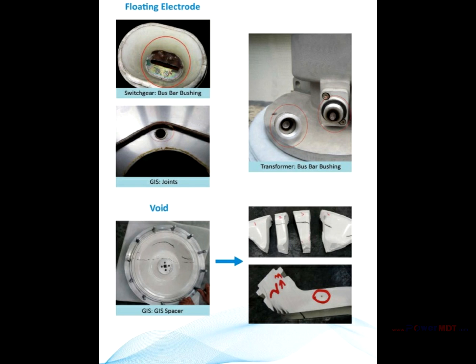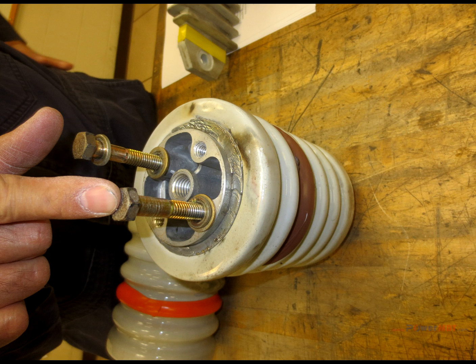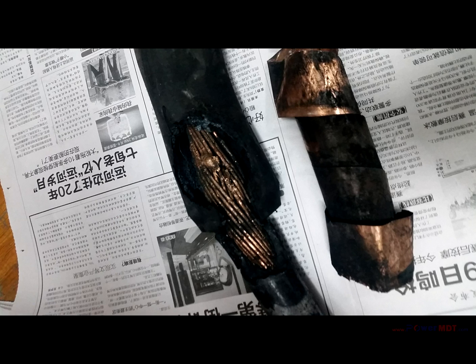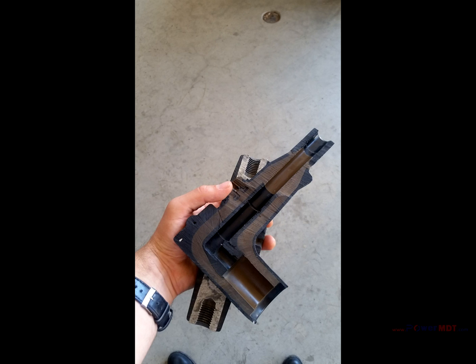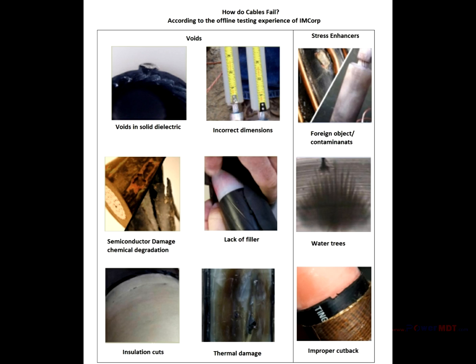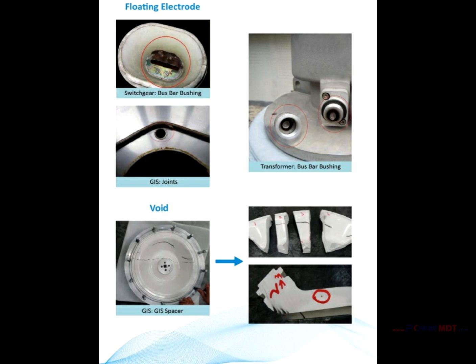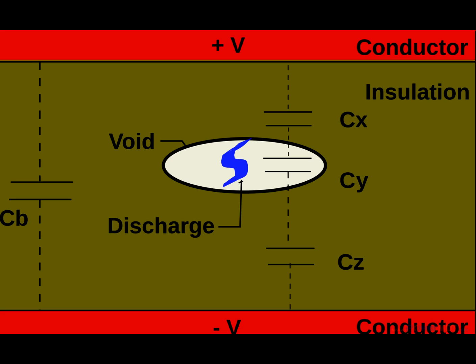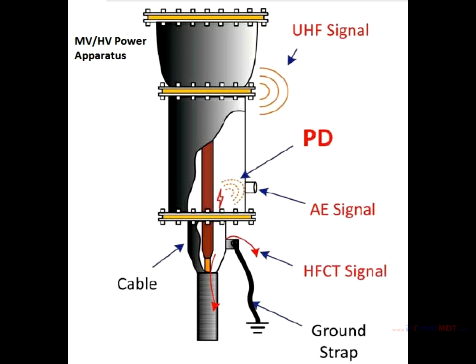OLPD detects and precisely locates insulation defects such as corona, surface tracking, arcing, voids, and floating electrodes. These issues are related to AC voltage stresses. In fact, partial discharges are completely driven by voltage and do not require a load or high current in order to become active.